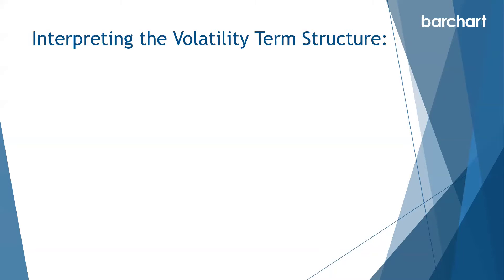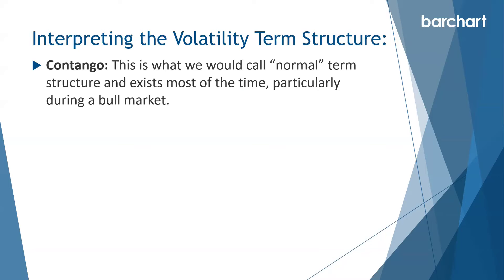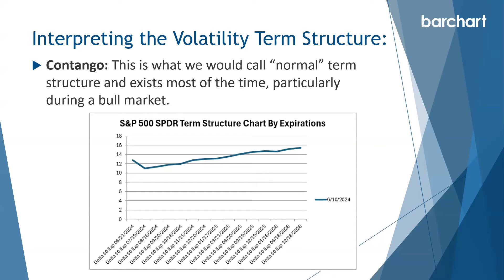Contango is what we would call a normal term structure and exists most of the time, particularly during a bull market. We can see that here at the moment on June 10th. We've got a little bit of noise here at the front of the term structure, but generally speaking we've got lower volatility in the short-term options. And as we move further out through time, the volatility is higher — that's what we call contango.